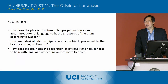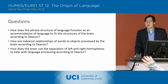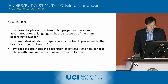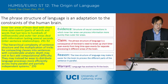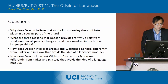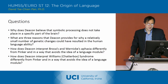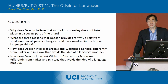So, questions to this point? Yes? Can you go back to the last question so I can answer the second question? Oh — three reasons that Deakin provides for why a relatively small number of genetic changes could have resulted in the human language ability. Do you want me to answer it again?